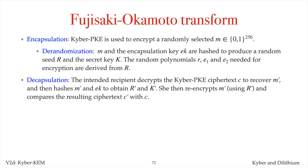In decapsulation, the intended recipient decrypts the Kyber PKE ciphertext c to recover m-prime, then hashes m-prime and the encapsulation key ek to obtain r-prime and k-prime. She then re-encrypts m-prime using r-prime and compares the resulting ciphertext c-prime with c. If encryption was done correctly, m-prime equals m, hence r-prime equals r and k-prime equals k, so the re-encryption of m produces c. This reproducibility of c is why a deterministic encryption scheme is needed.